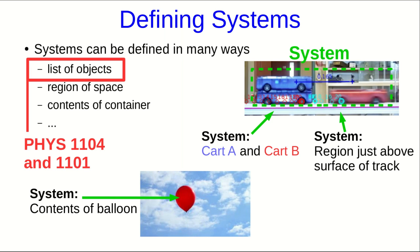By far the simplest, which is how we always define systems in FIS 1104 and 1101, was as a list of objects. Because then, by definition, no objects can enter or leave the system.